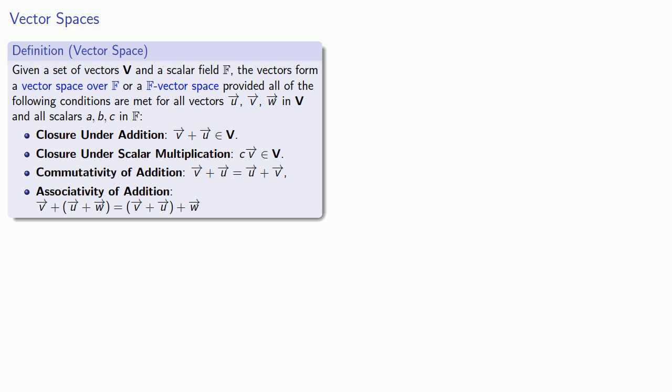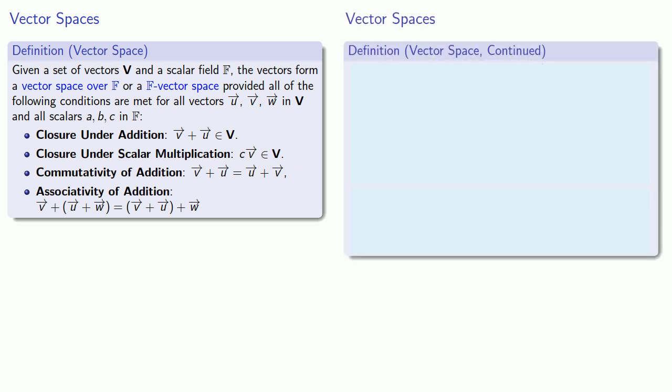But wait, there's more. We also want to make sure that we have a zero vector. So without committing to what it actually looks like, there should be some vector zero that for any other vector that we choose, the vector v plus our zero vector should just give us back the vector v.